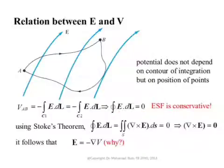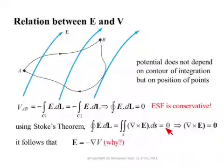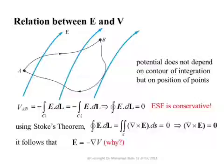From Stokes' theorem, a closed line integral like this can be converted to a surface integral over any surface enclosed by that contour. There are infinitely many surfaces enclosed by any closed contour. Picking one gives us: the curl of E dot dS equals zero. Because this holds for any S and any contour C, the curl of E must be zero at every point. This tells us that the electric field is irrotational — it does not have a curl.